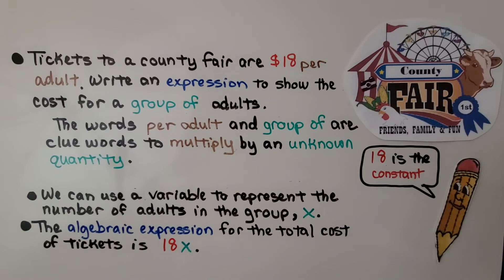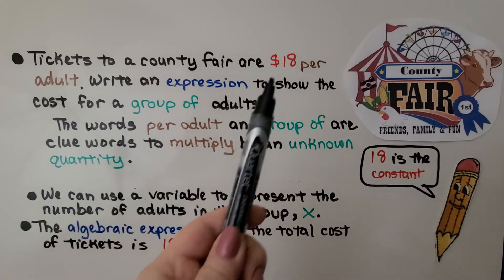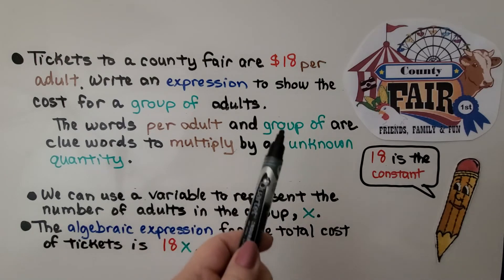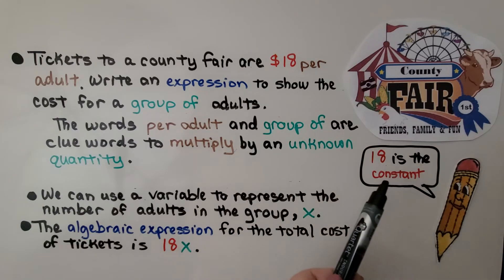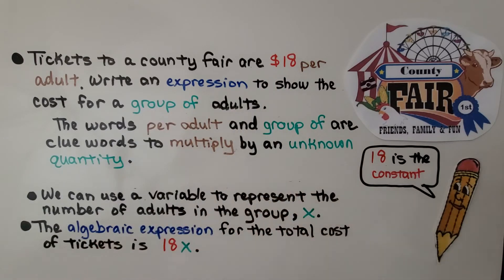Tickets to a county fair are $18 per adult. Write an expression to show the cost for a group of adults. The words 'per adult' and 'group of' are clue words to multiply. We're going to multiply $18 for each adult. We don't know how many are in the group — that's an unknown quantity. 18 is our constant; it's not going to change. But the number of people in the group could vary, so we use a variable x to represent the number of adults. The algebraic expression for the total cost of tickets is 18x — 18 multiplied by some unknown number x.